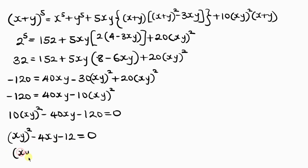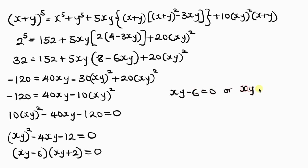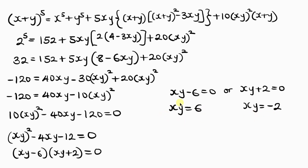Factorizing the quadratic equation: xy minus 6 times xy plus 2 equals 0. So we have two cases. Case 1: xy minus 6 equals 0, giving xy equal to 6. Case 2: xy plus 2 equals 0, giving xy equal to negative 2.